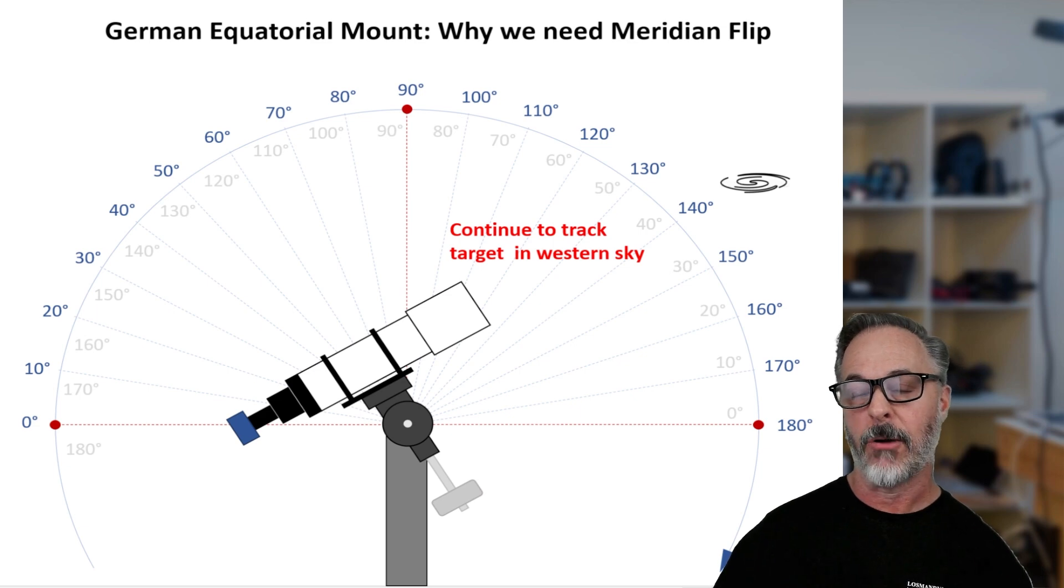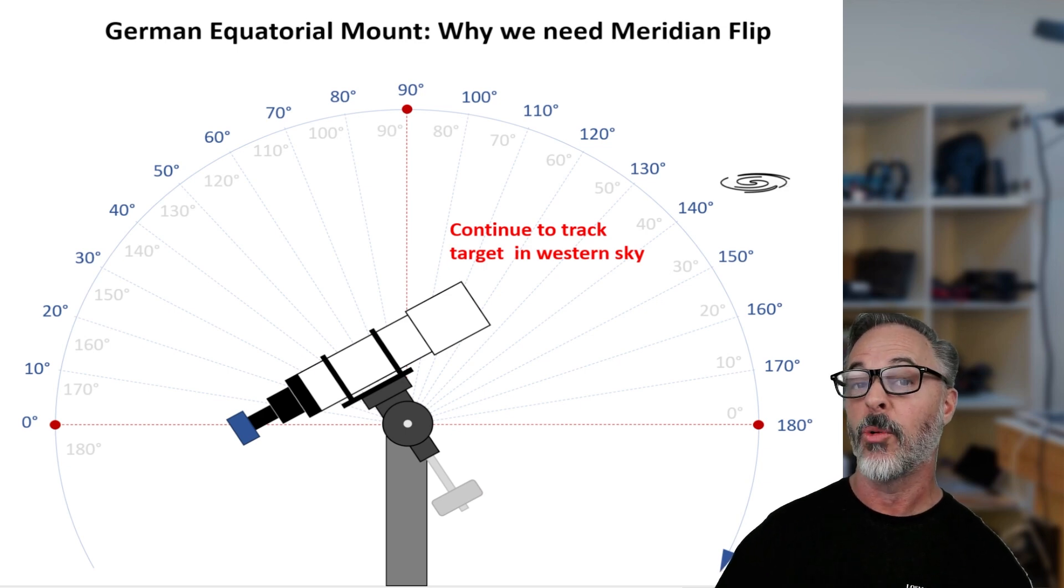And that is why with a German equatorial mount design, we need that meridian flip because we want to maximize our time around the meridian, both in the Eastern sky and the Western sky.